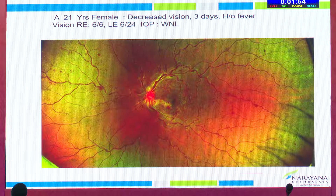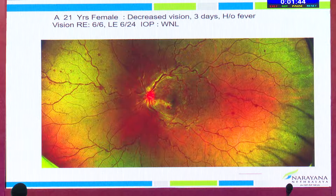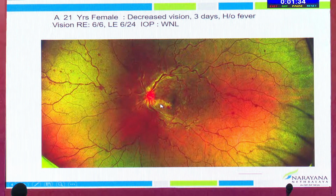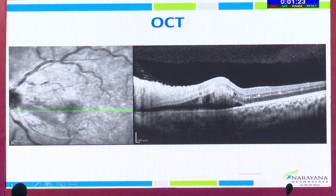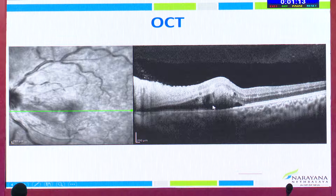Moving on to the last case: a 27-year-old female presented with decreased vision since three days and gave history of fever. Examination of the right eye was absolutely fine. Left eye visual acuity was 6/24, intraocular pressure within normal limits. Fundus evaluation showed retinitis 1+ with edema of the disc, retinal opacification, multiple retinal hemorrhages with tortuosity of the vessels. OCT showed altered foveal contour with hyperreflectivity in the subfoveal region, disruption of the ellipsoid zone and external limiting membrane — this characteristic OCT picture made me suspect dengue foveolitis. Posterior uveitis with retinitis and impending vein occlusion was suspected.